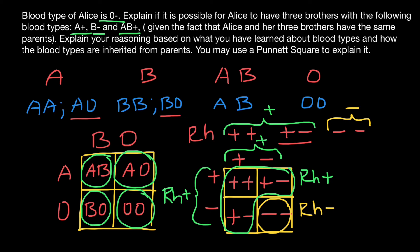Among the children, regardless of which ABO blood group they belong to, we can find both Rh positive and Rh negative blood types. These two characteristics of blood groups are inherited independently. So in the progeny we can find, for example, someone who belongs to blood group AB and can be Rh positive or Rh negative, or blood group A and also Rh positive or Rh negative. This explains how Alice can be blood group O, her brothers can belong to different blood groups, and they can also belong to different Rh systems — whether positive or negative.